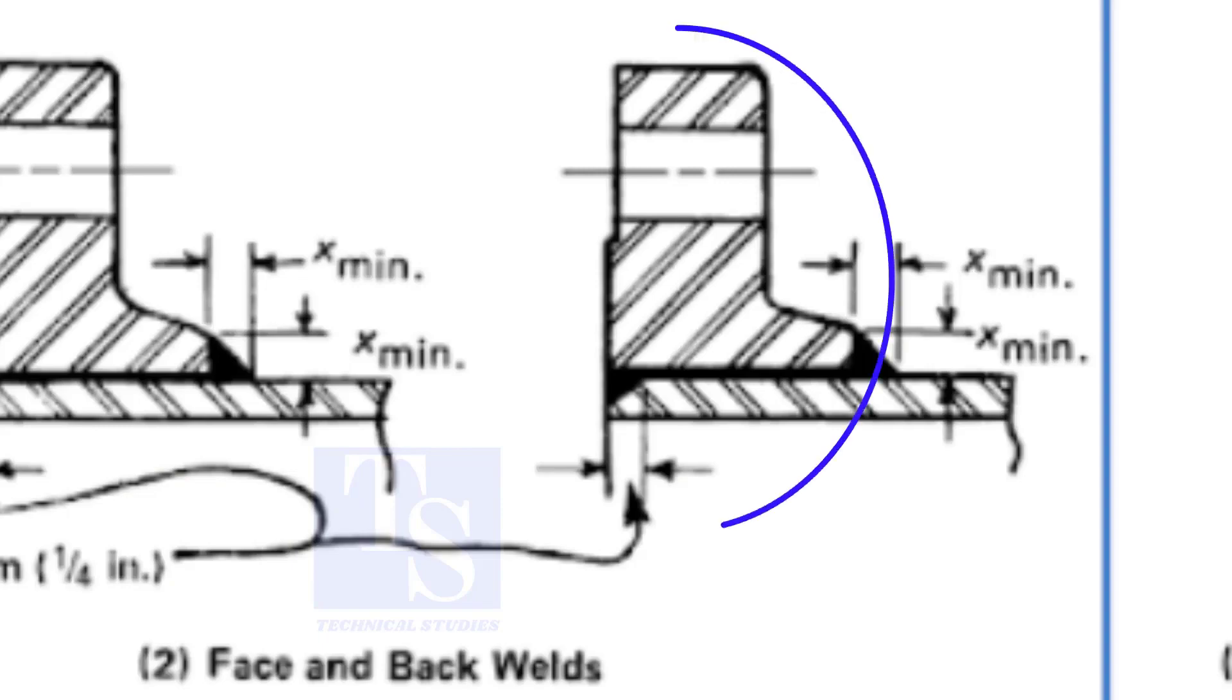In the third method, you can see the face of the pipe and the flange are the same. Here, the end of the pipe is beveled.